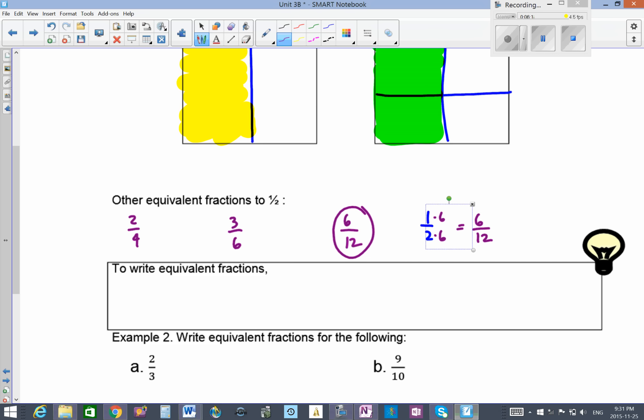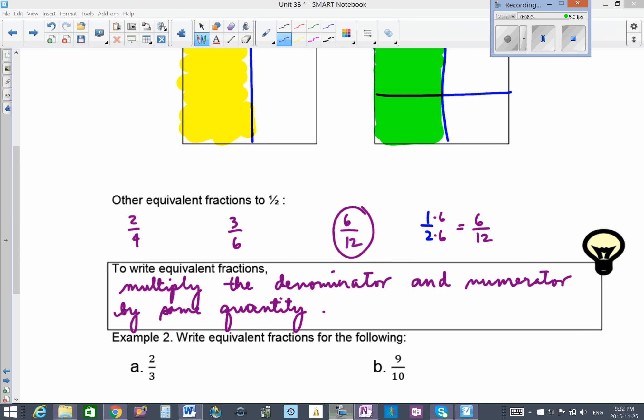To write equivalent fractions, we just multiply your numerator and denominator by the same quantity, which is in this case 6 for 6 over 12. You can pause this video here. I've written the how to write equivalent fractions there in cursive. Hope you understand that.